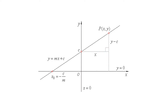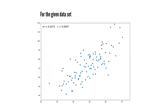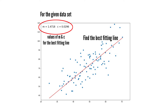We'll use this equation to train our model with the given dataset and predict the values of y for any given value of x. For our dataset, we'll find the best fitting line — in other words, the line that is at the least distance from all the points, or the line that gives the least error. By finding the values of m and c, we'll be able to plot this line.